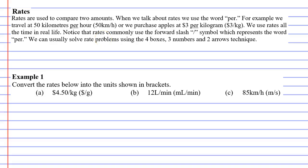In this video we are going to introduce rates. Rates are very important and we see them all the time in real life. I actually have a couple of examples here. One is on speed — we say 50 kilometers per hour. Notice that the forward slash is pronounced 'per'. The next one, when we buy fruit from a shop, it's $3 per kilogram.